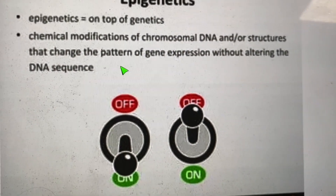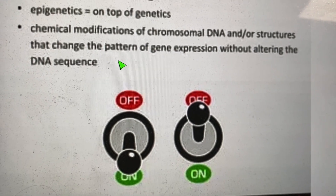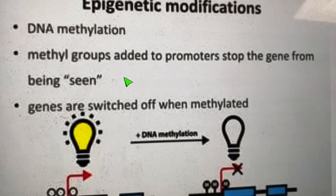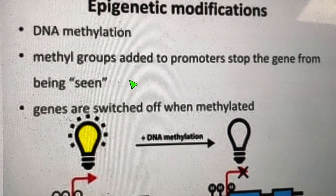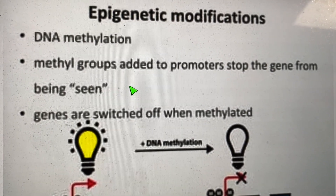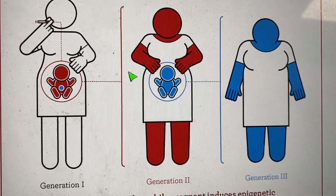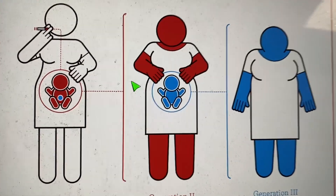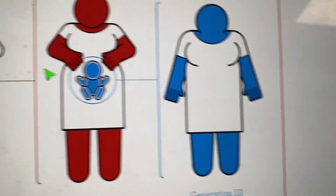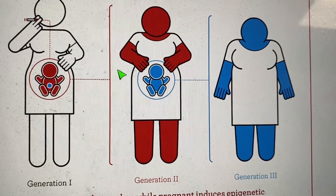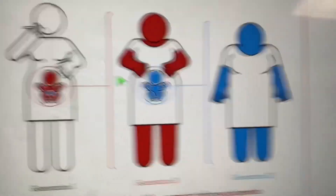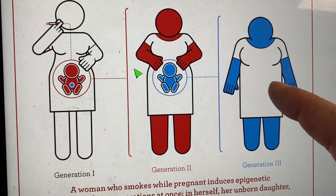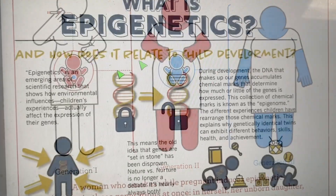Epigenetics is the study of these switches and how the environment affects them. These gene switches can be turned on and off, and they can be blocked from being turned on or off by environmental factors. What's really cool is that those gene switch states can be inherited — passed down from parents to offspring. The genes themselves aren't changed; just whether or not they can switch on or off is changed. So it's not all just what genes you get — it's also what gene switches were turned on, and what your parents did may actually affect you.